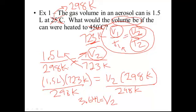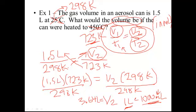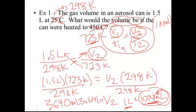They might make it trickier by asking for the answer in milliliters instead of liters. We need to know that one liter equals a thousand milliliters — 'milli' means a thousand. So if they wanted this answer in milliliters, we take 3.64 and multiply by a thousand, moving the decimal point three spaces to the right, giving 3,640 milliliters. Usually with volume it'll be either liters or milliliters, and with temperature it's either Celsius or Kelvin.